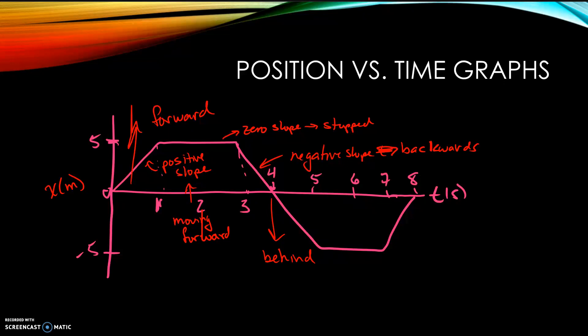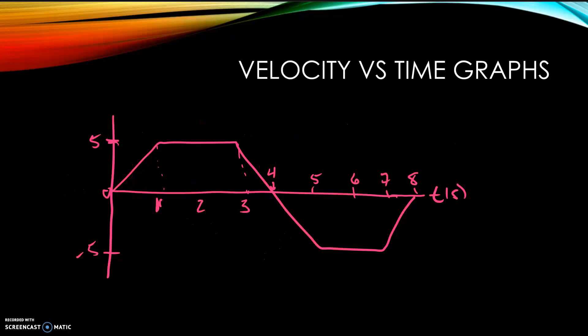Now the next one we're going to look at is a velocity versus time graph, which is a little different in interpretation. The main differences are what indicates the object has stopped, what indicates it's moving forward, and what indicates it's moving backwards. The graph looks the same shape, but now instead of position we have velocity in meters per second on the vertical axis and time along the horizontal.